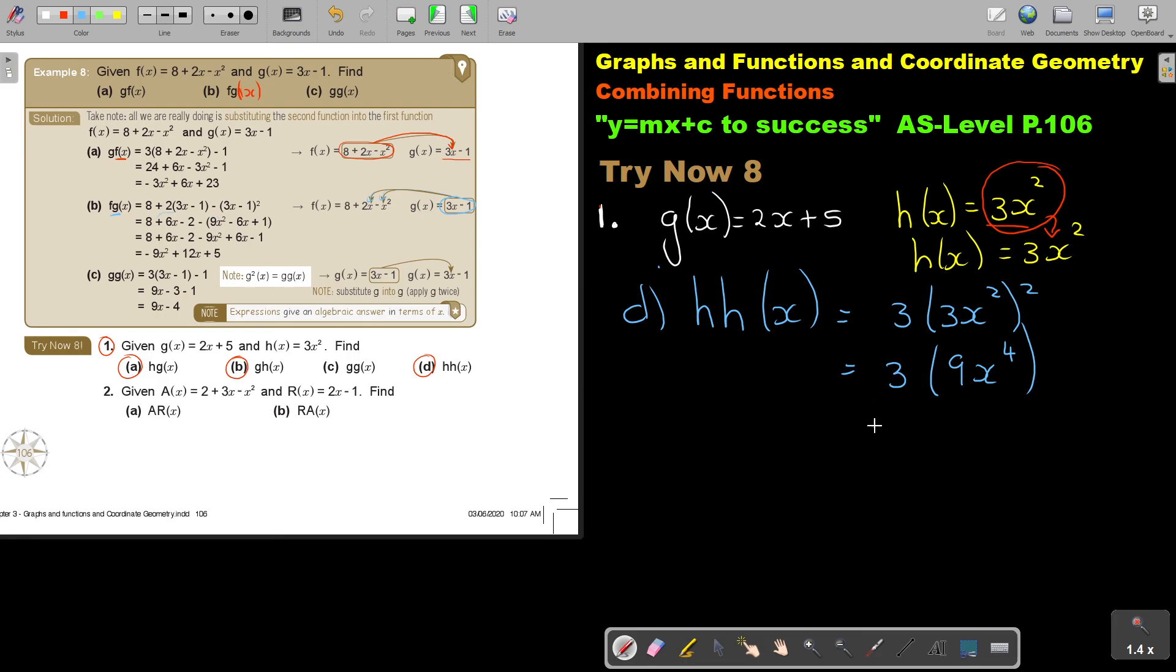And then, if I'm going to say 3 times 9, that's 27x to the power of 4. And that's not so difficult.